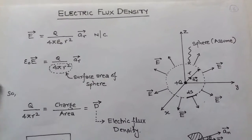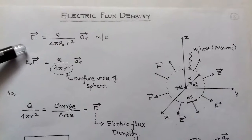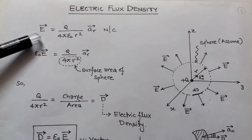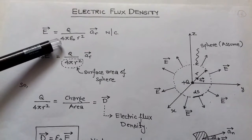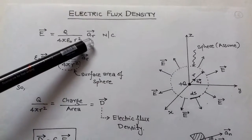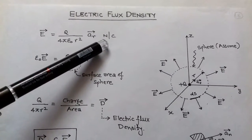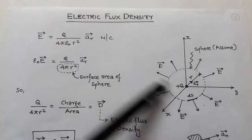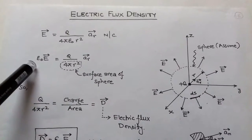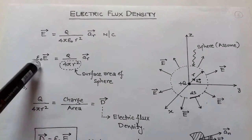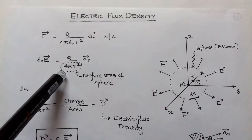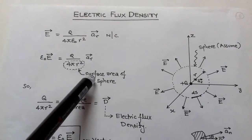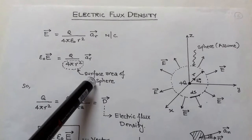Electric flux density. We take the formula of electric field intensity E, which equals Q upon 4πε₀R² in the direction of R, with units of Newtons per coulomb. Moving ε₀ to the left side, it becomes ε₀E = Q upon 4πR² in the direction of R, where 4πR² is the surface area of the sphere.